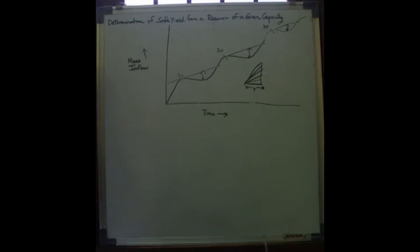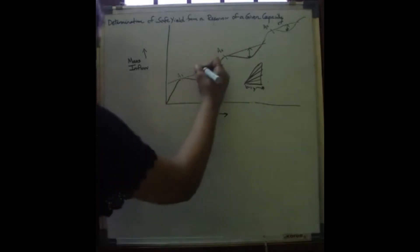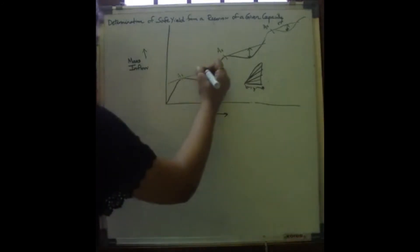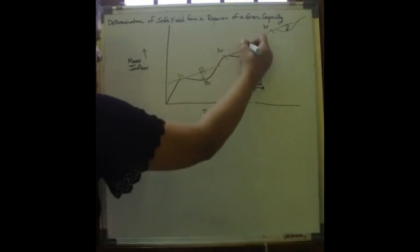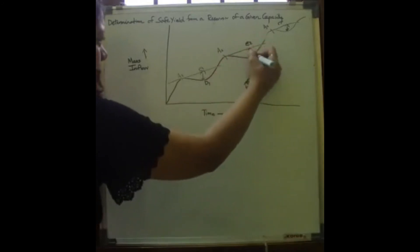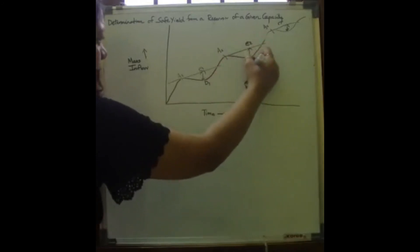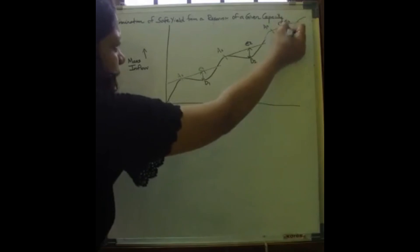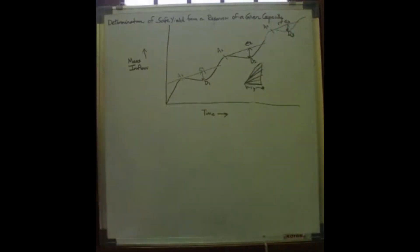The vertical intercepts E1D1, E2D2, E3D3 are all equal to the reservoir capacity. That is, the maximum vertical departure between the tangent and the mass inflow curve equals the given reservoir capacity.